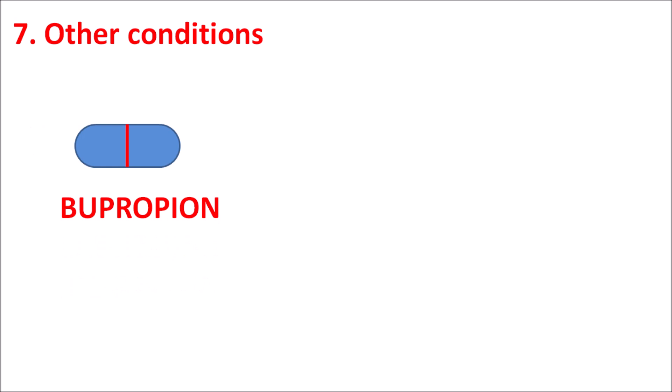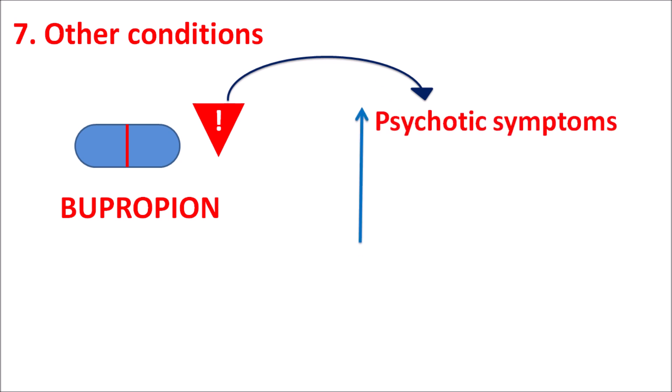Finally, let us see other conditions where this drug should be carefully given. Since this drug acts on the CNS, it can produce central side effects. It should be carefully given in patients who develop any psychotic symptoms. It can also increase the risk of suicidal thoughts in young patients, and being an antidepressant it can increase the manic phase in some patients — so in such conditions this drug should be carefully administered.